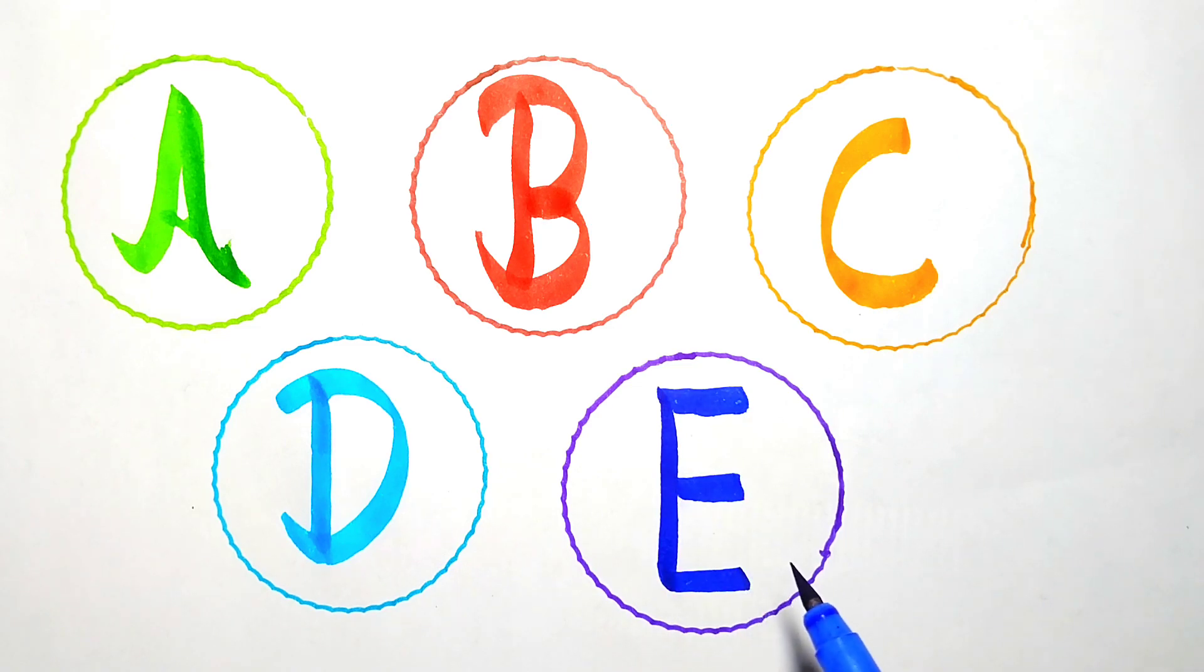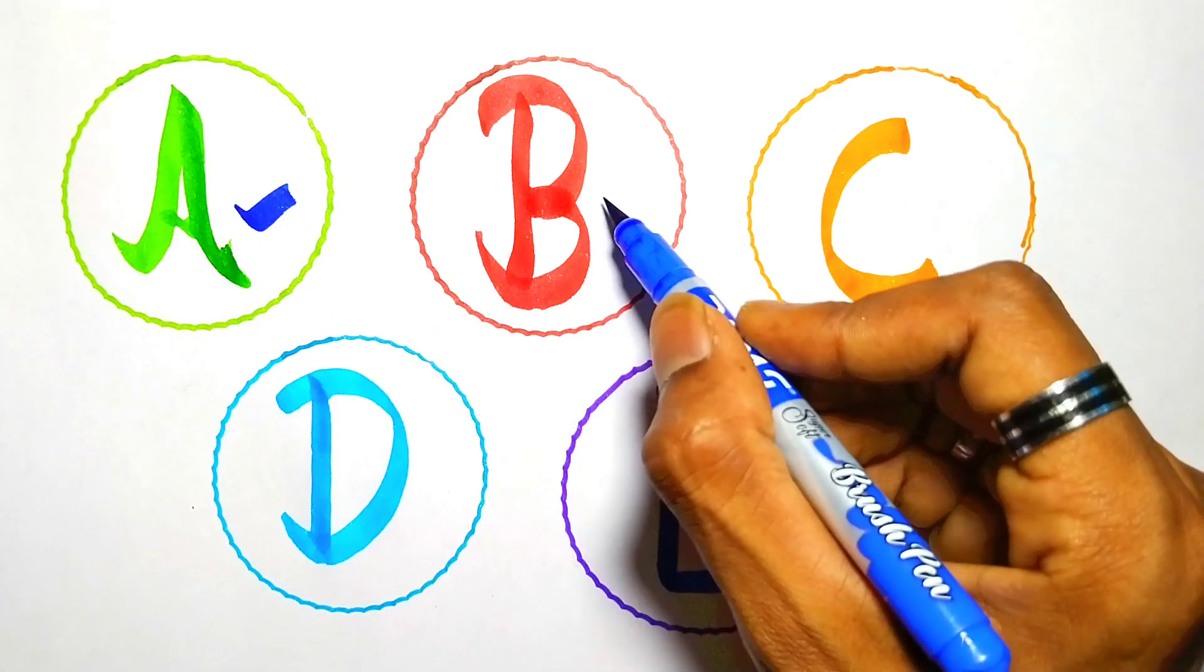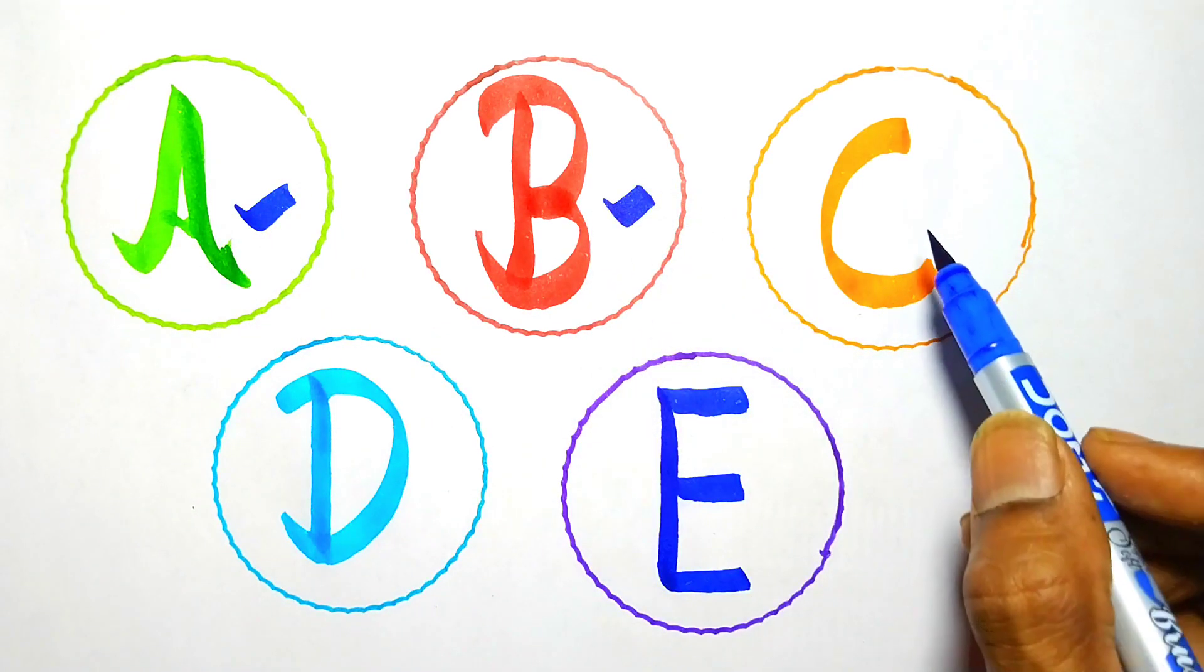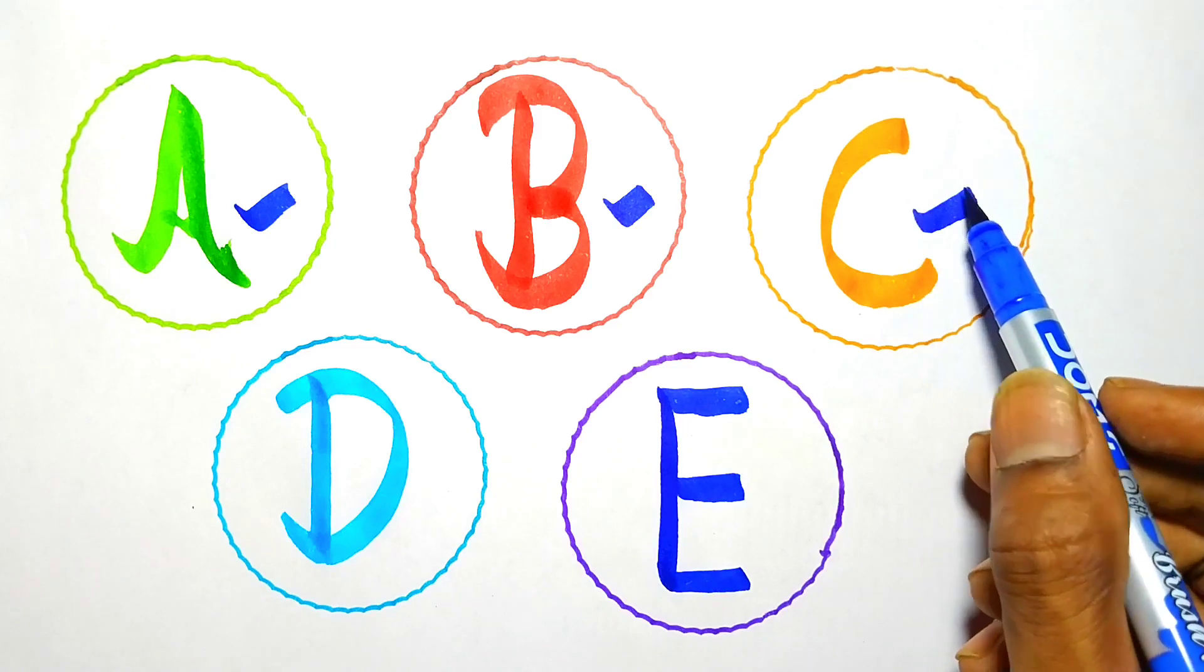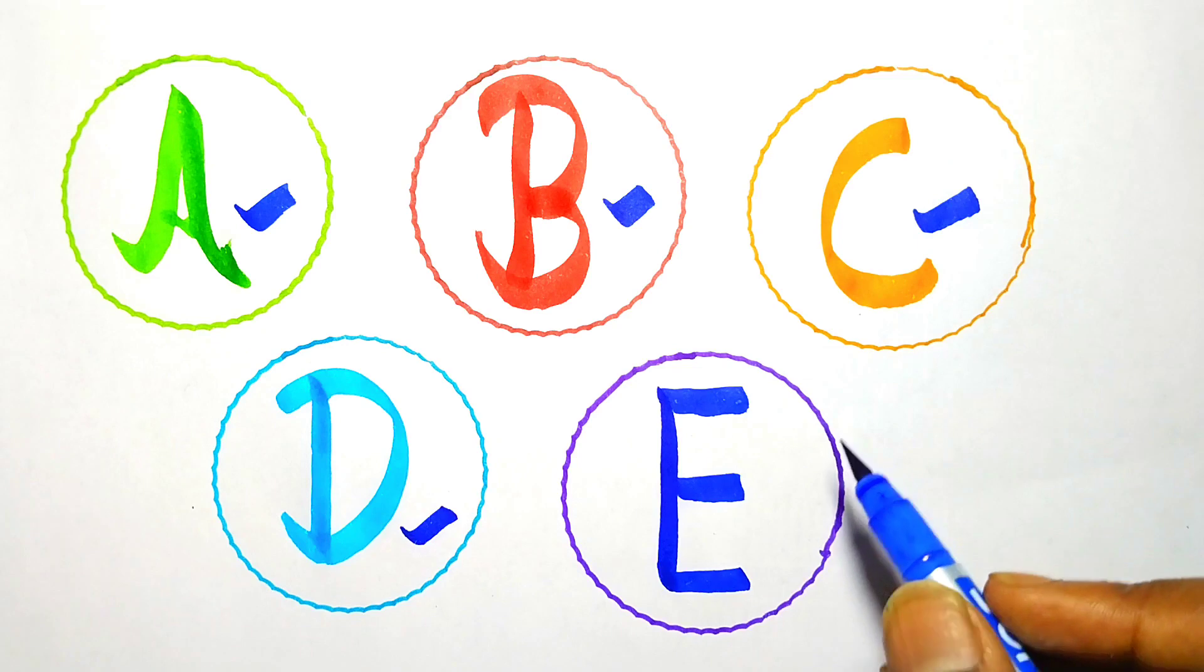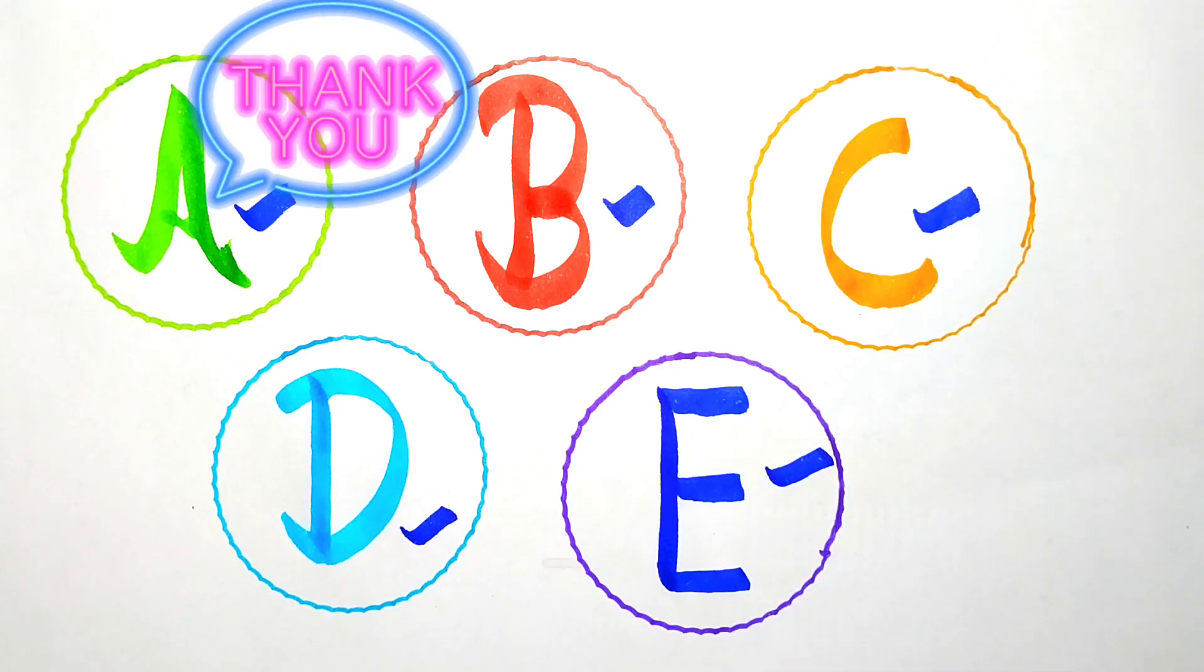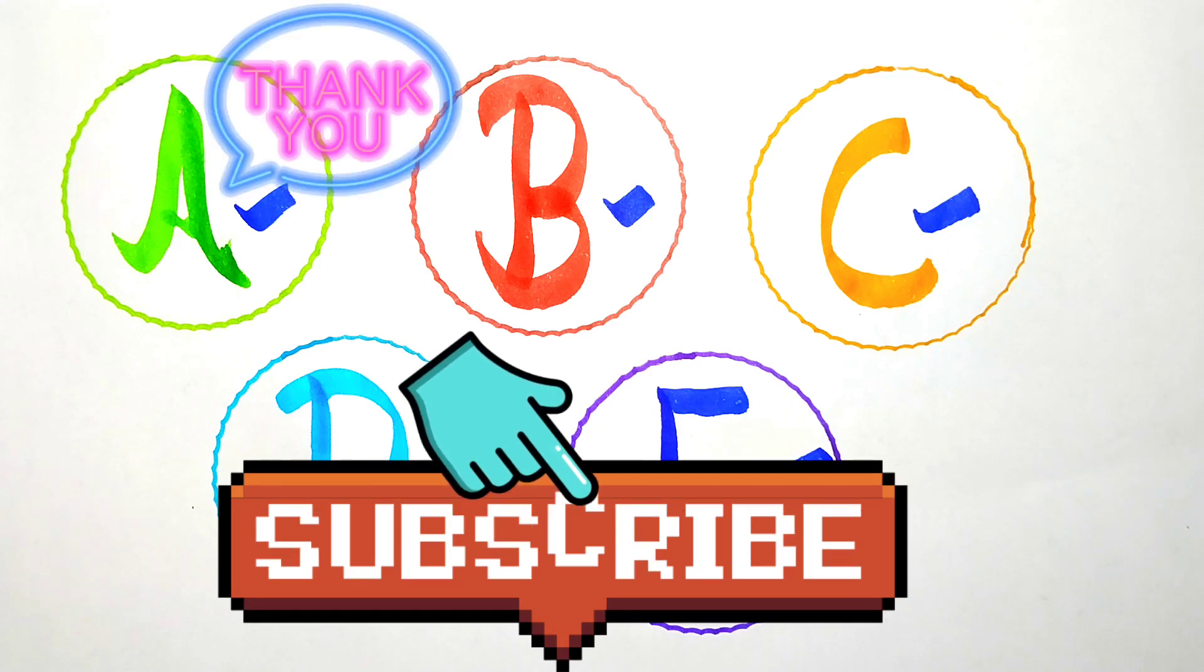E for elephant. A for apple, B for ball, C for cat, D for dog, E for elephant. Thank you children. Like this video and subscribe my channel.